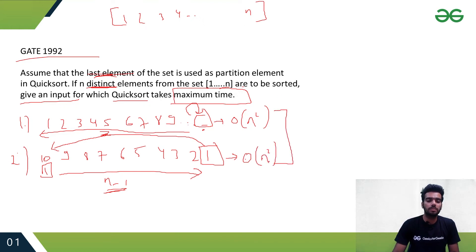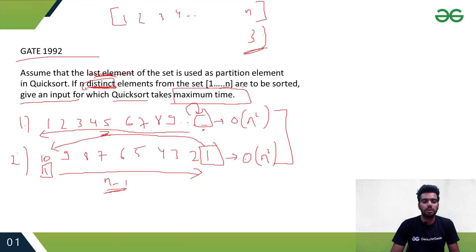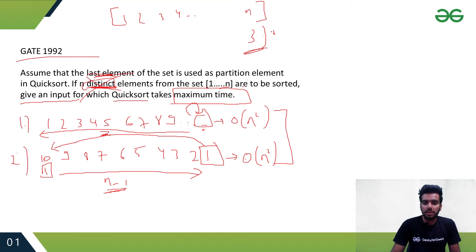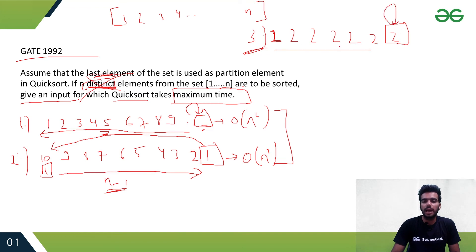There is one more case in which quicksort takes maximum time. But in this question 'distinct' is mentioned, so that case doesn't apply here. If 'distinct' is not mentioned, there's another case: if all elements have the same value — say 2, 2, 2, 2, 2 — then picking any element as pivot still places it in position, and we have to perform quicksort on n-1 elements again. So all-equal elements also cause quicksort to take O(n²) time.